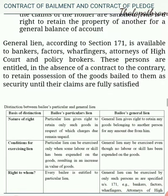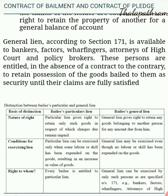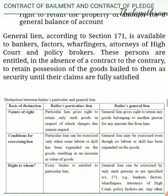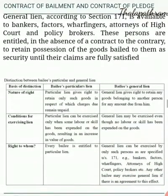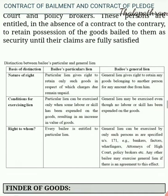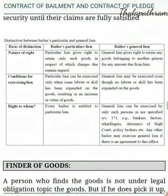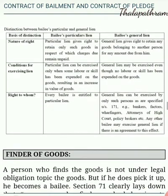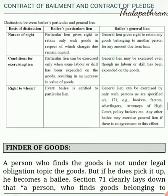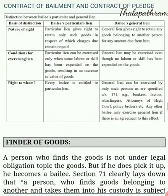Distinction between bailee's particular and general lien. First, nature of right: Particular lien gives the right to retain only such goods in respect of which the charges due remain unpaid. General lien gives the right to retain any goods belonging to another person for any amount due from him. Second, conditions for exercising lien: Particular lien can be exercised only when some labour or skill has been expended on the goods, resulting in an increase in the value of goods. General lien may be exercised even though no labour or skill has been expended on the goods.